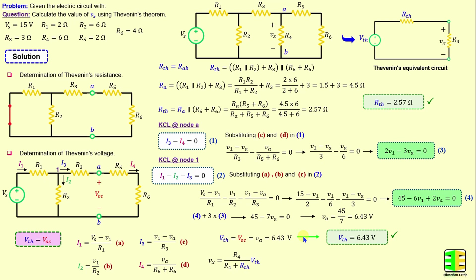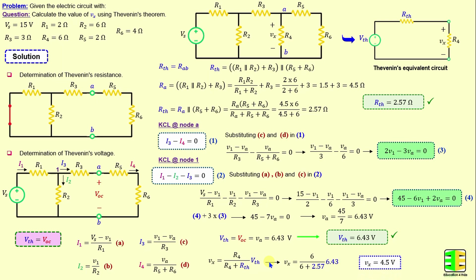To calculate the voltage Vx across resistor R4, I apply the voltage division rule: Vx = (R4 / (R4 + Rth)) × Vth. Substituting the numerical values of R4, Rth, and Vth, we obtain Vx = 4.5 volts.